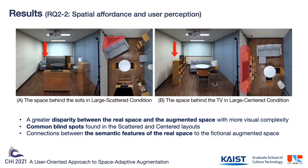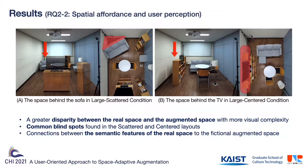For viewing behavior, we found three patterns. First, participants felt a greater disparity between the real space and the augmented space when the game scene was more visually complex. Second, common blind spots were found in the scattered and centered layouts, whose locations are shown in the figures. Third, they intended to link the semantic features of the real objects to their role in the augmented game space.